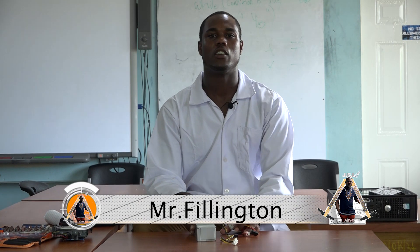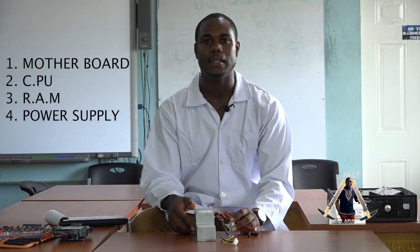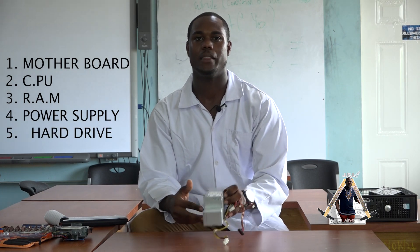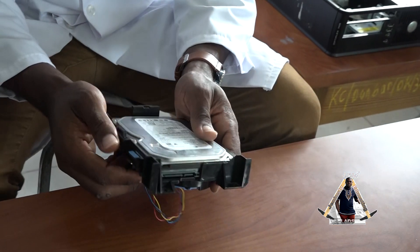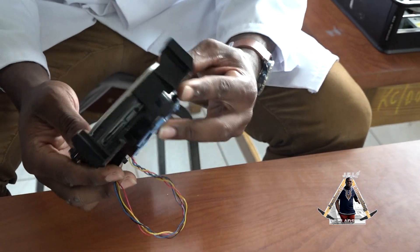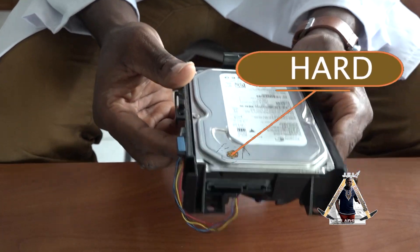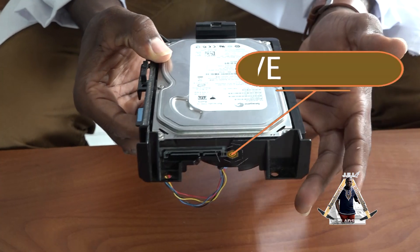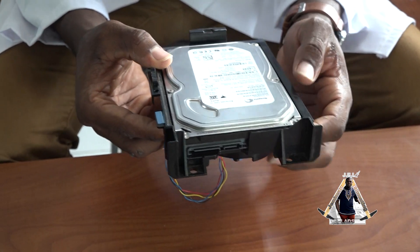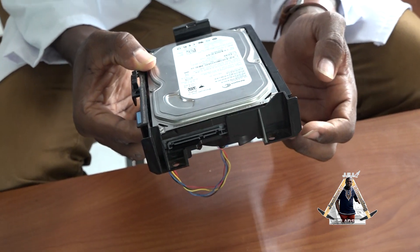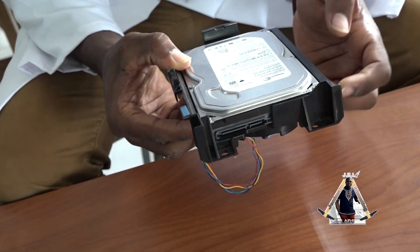We looked at the motherboard, the CPU, the RAM, the power supply, and now we're going to look at the hard drive. What I have in my hand is called the hard drive. This serves as a filing cabinet where programs and data are stored on the disk. When the computer accesses the hard drive, it is reading and moving data into the RAM. However, the original files still remain on the hard drive.